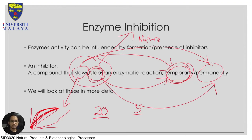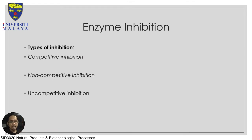Now looking in more detail at enzyme inhibitors - what are the categories? There are different types of inhibition. Towards the end of the day they all fall back to either slows or stops, temporary or permanent. There are three types of inhibition: one is competitive inhibition, the second is non-competitive inhibition, and the third is uncompetitive inhibition.